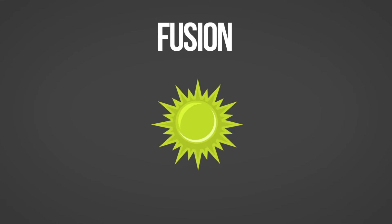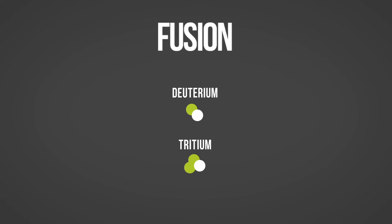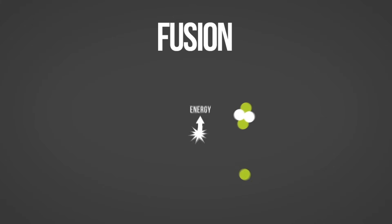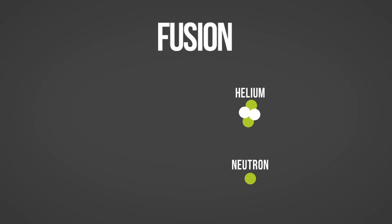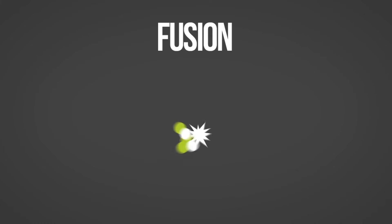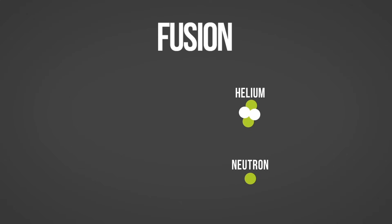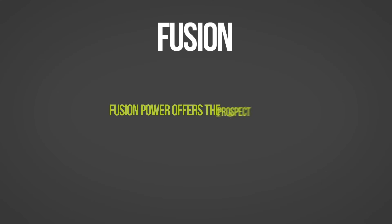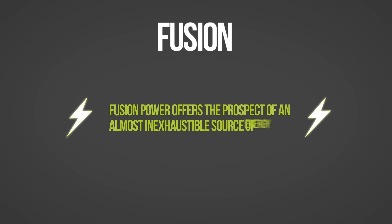The second type of nuclear energy is nuclear fusion, the same process that powers our sun. Fusion is a nuclear reaction in which atomic nuclei collide at a high speed and join to form a new type of atomic nucleus. During this process, matter is not conserved because some of the matter of the fusing nuclei is converted to photons, which produces energy. Fusion power offers the prospect of an almost inexhaustible source of energy.